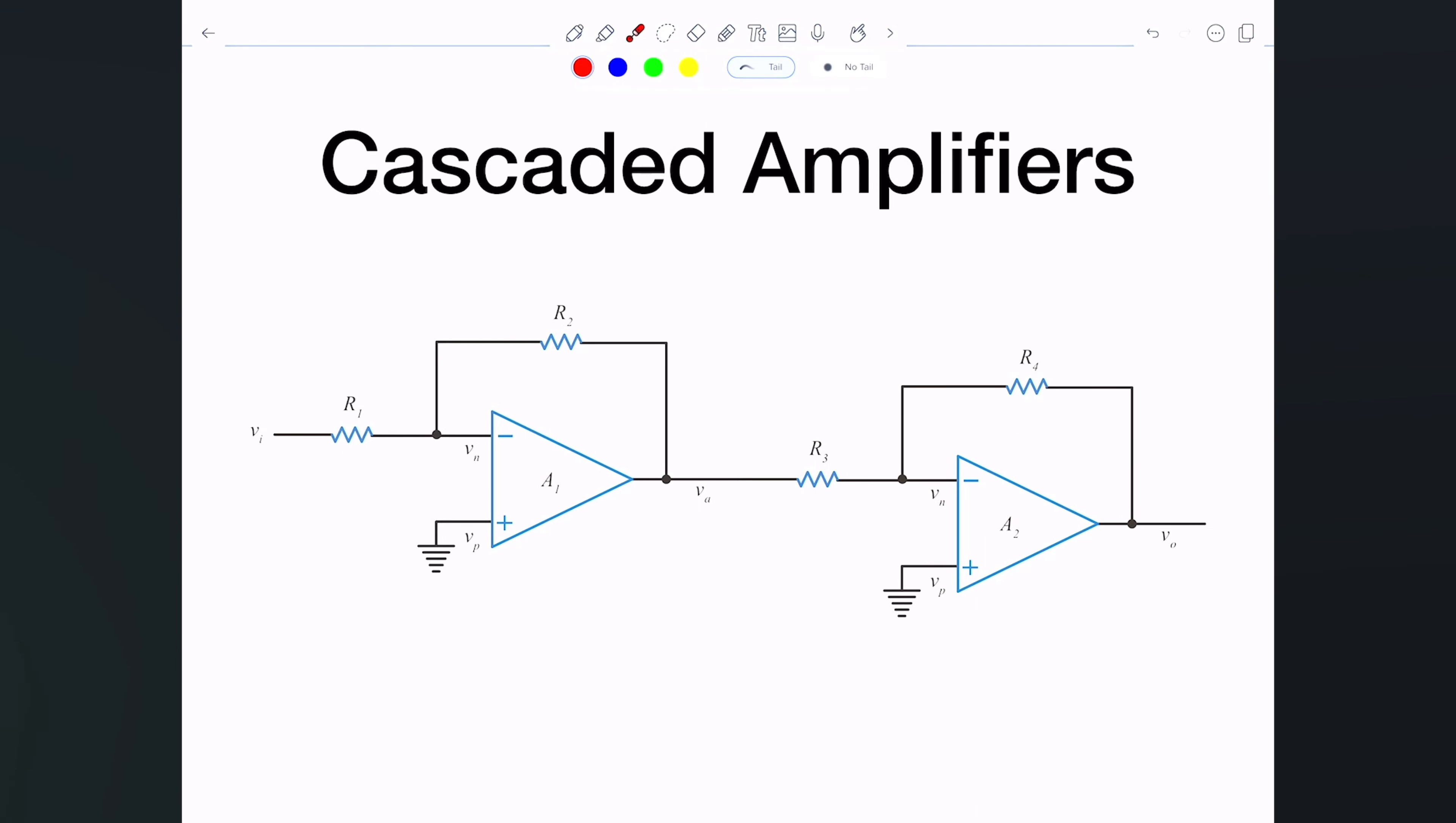We can cascade several operational amplifiers by connecting the head of one amplifier to the tail of the other amplifier, and the amplifiers do not have to be in the same configuration.